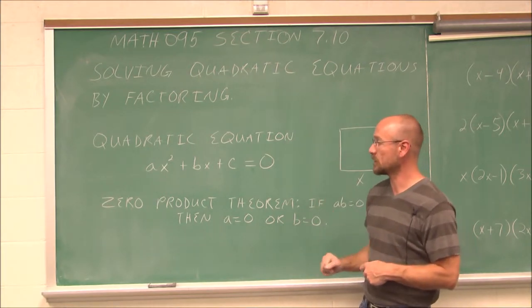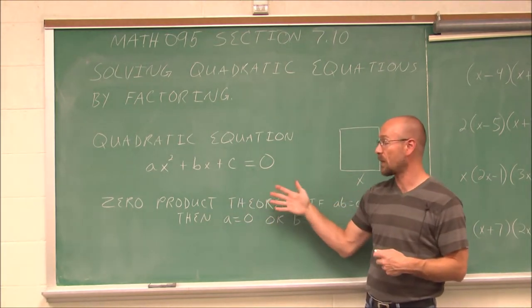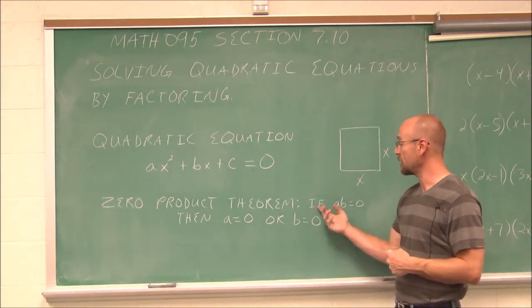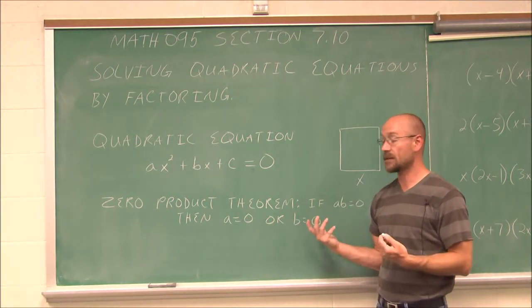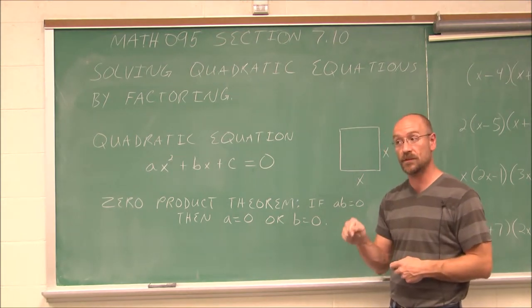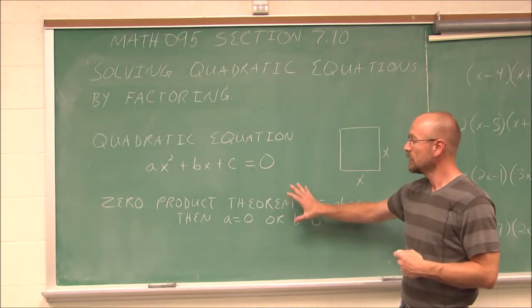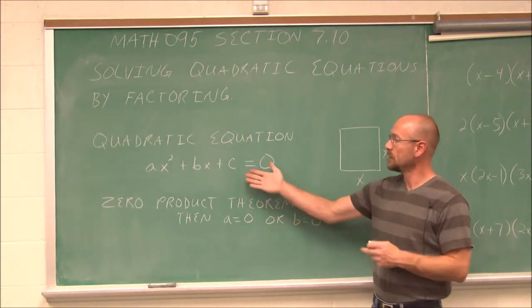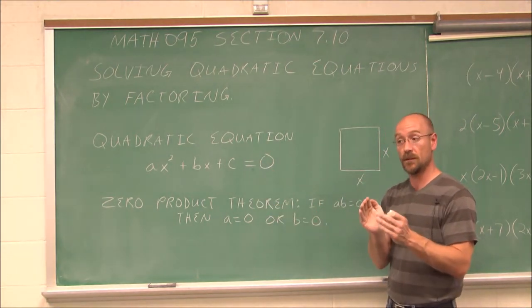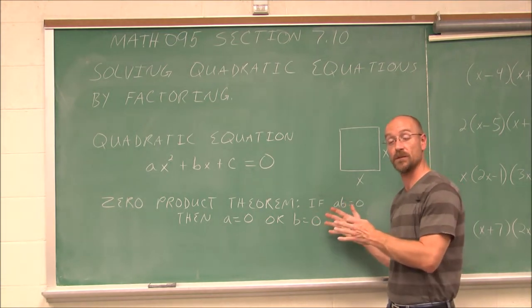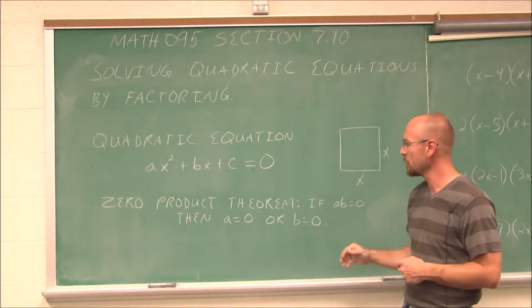Standard form is important because in order to solve a quadratic equation, you have to make sure it is set equal to 0. The reason why we set these equal to 0 is because of something called the zero product theorem. Don't be intimidated by that term — it is actually something you already know. It basically says: if a times b equals 0, then either a is 0 or b is 0. Anything times 0 is 0. So if we can break it down into its factors by factoring, and any one of them is equal to 0, then the entire equation would be equal to 0.